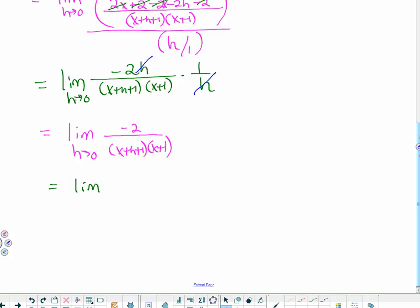The h is reduced to 1 and leaves me the limit as h goes to 0 of negative 2 over x plus h plus 1, x plus 1. And then we can substitute our 0 in, making x plus 1 quantity squared. And there's our derivative of our function f.